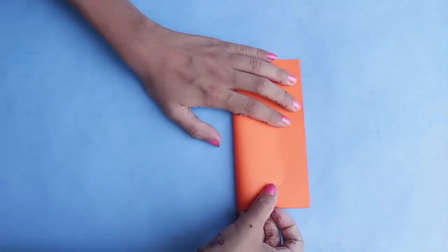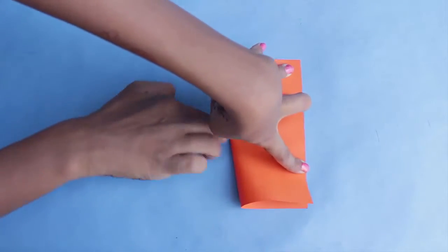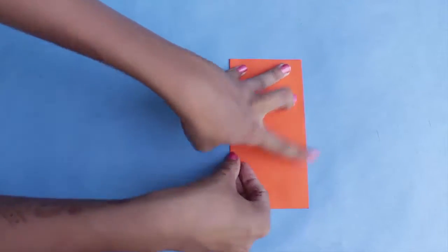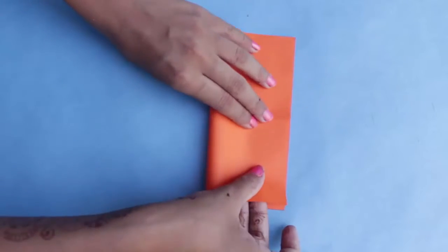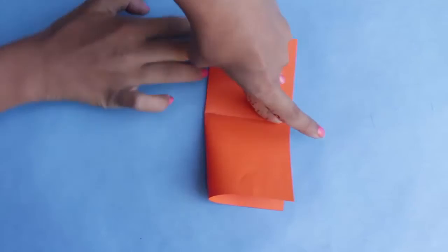You have to start by folding the paper in half. Now open the fold and again fold the remaining half. By this you will get four little squares.